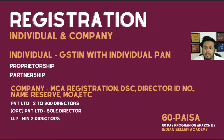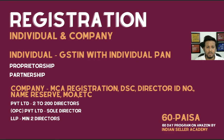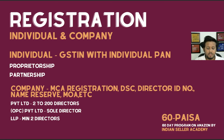For individual registration — whether proprietorship or partnership — it's pretty straightforward. All you need is your own individual bank card with your name, and you can get your GST number for your company name. For a company, you'll have to do MCA registration (Ministry of Corporate Affairs), get your name reserved, apply for a DSC (digital signature certificate), get a directorship ID, and complete the MOA (memorandum of association), among other documents.